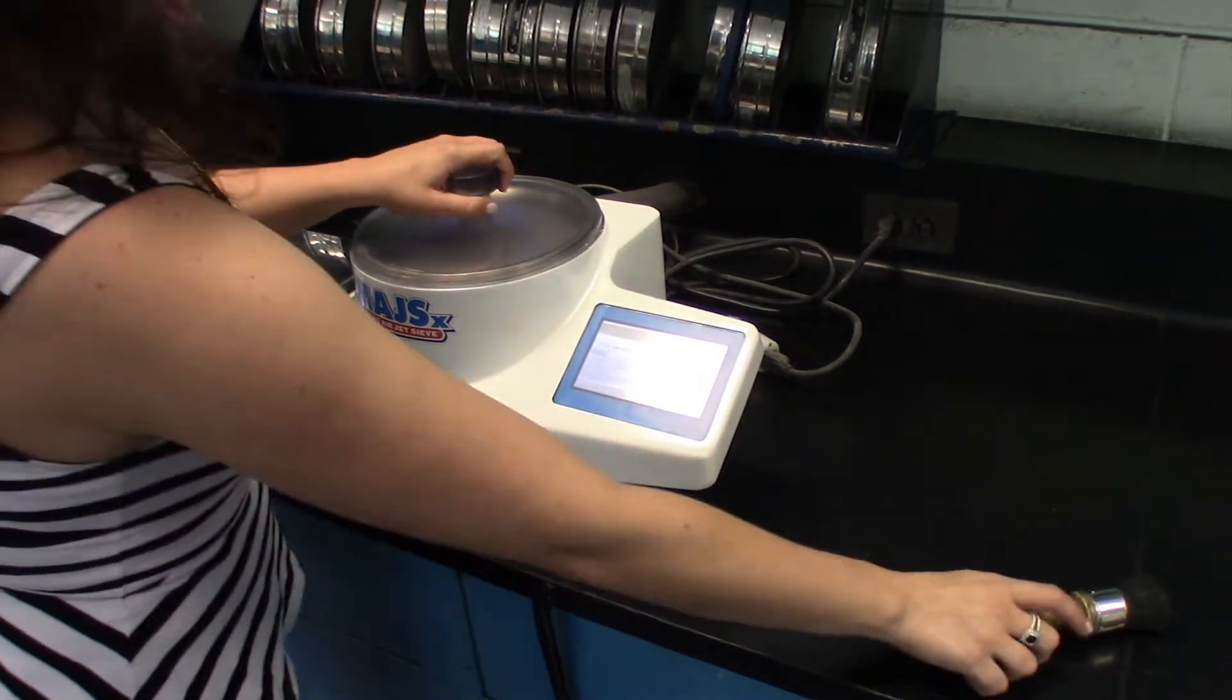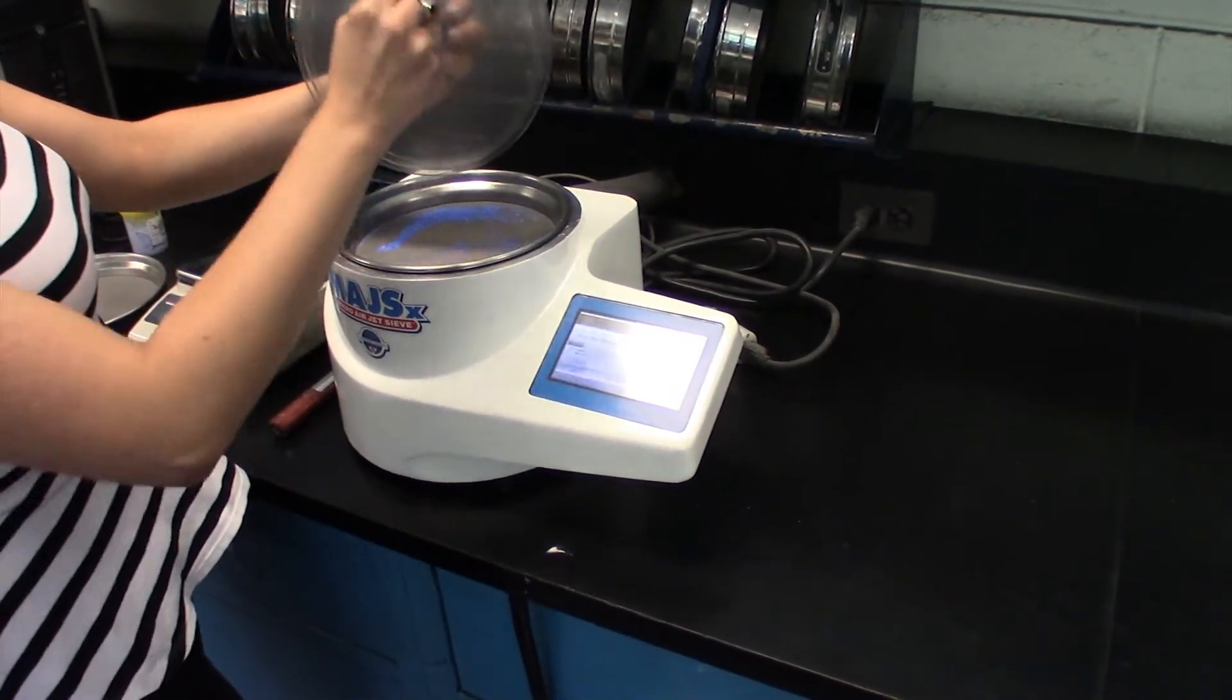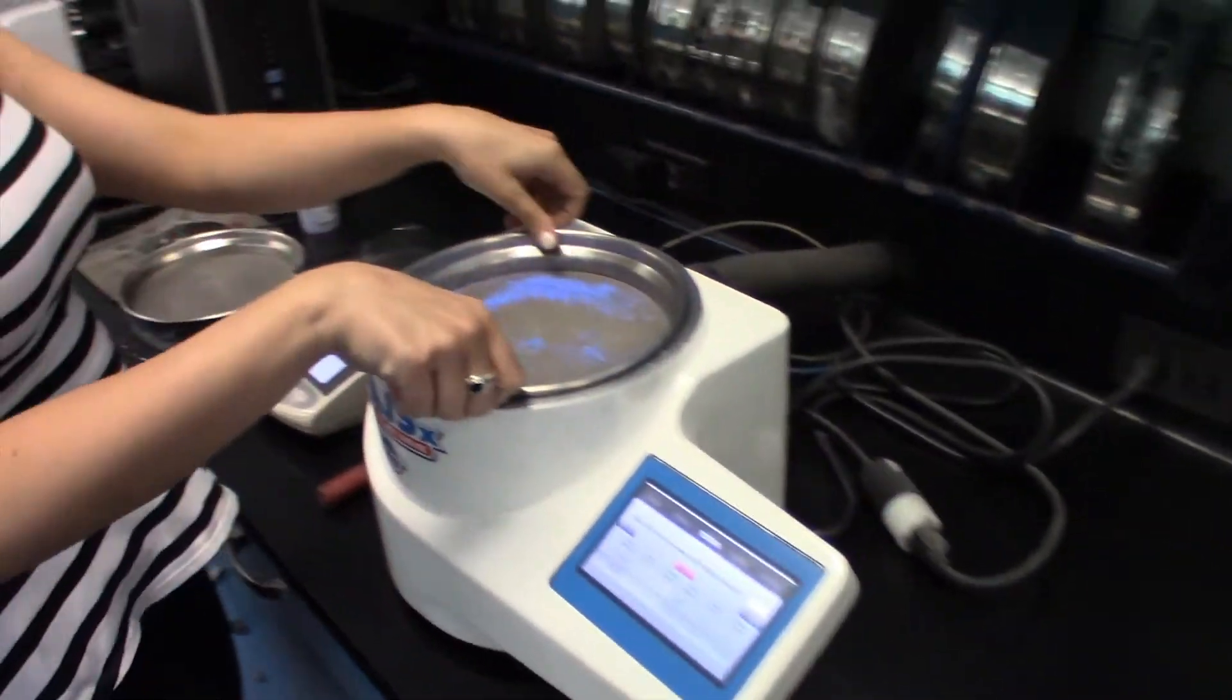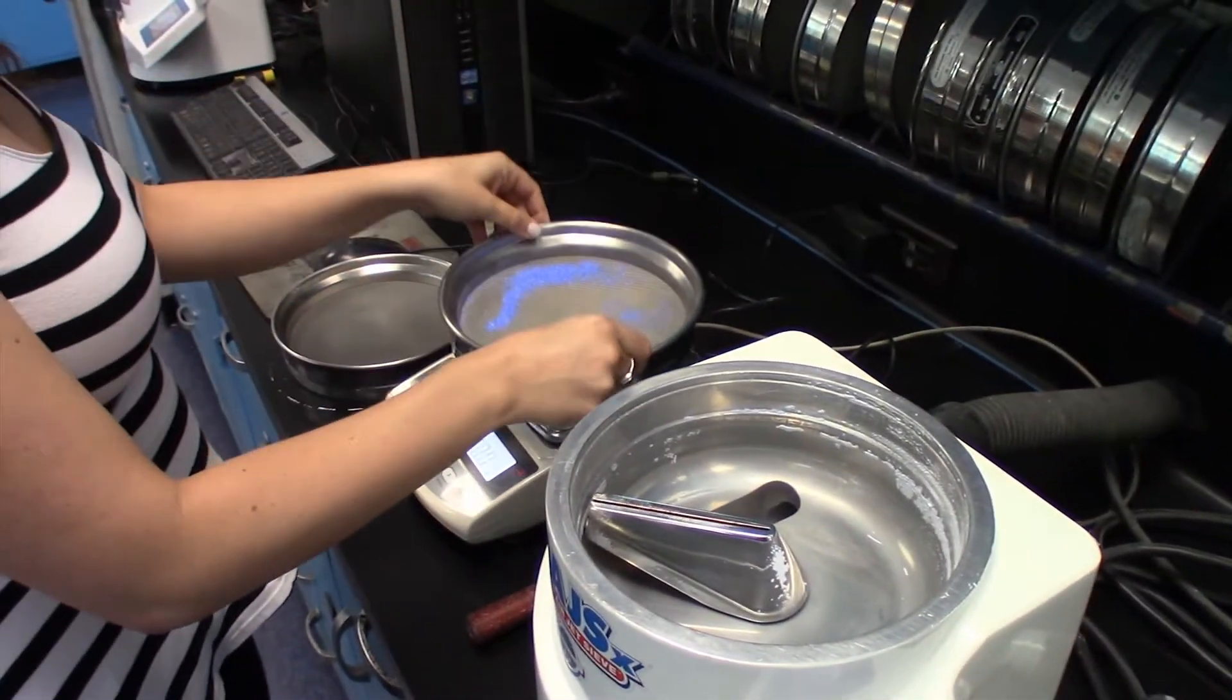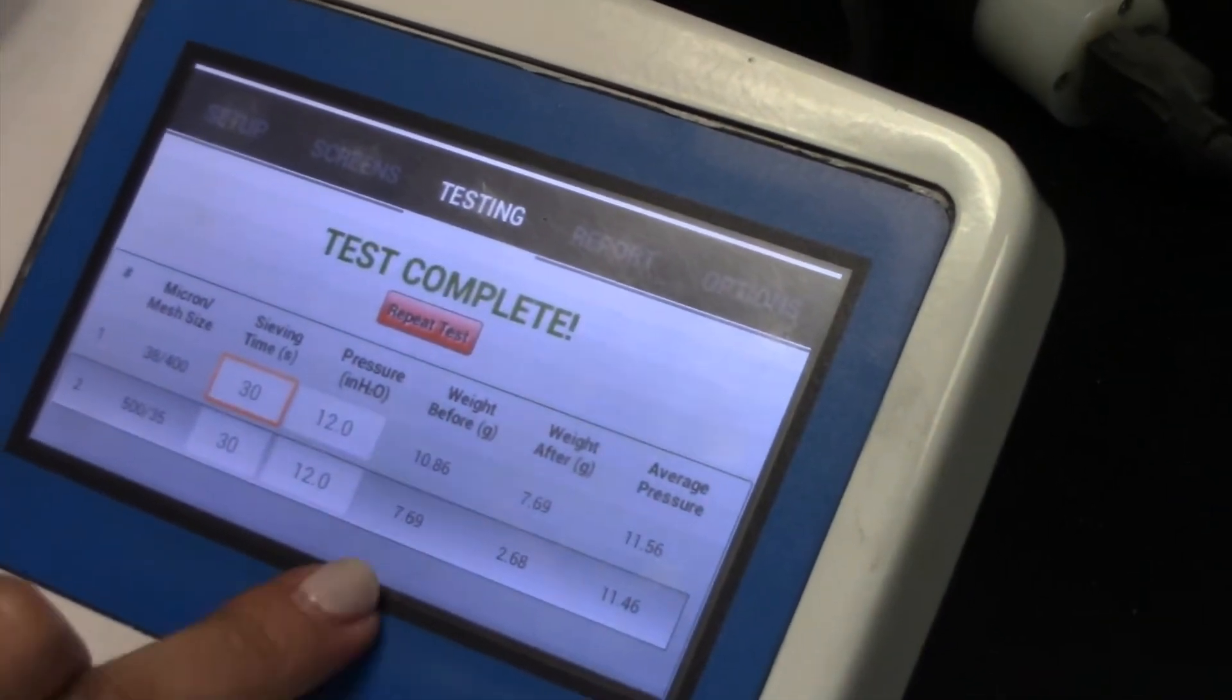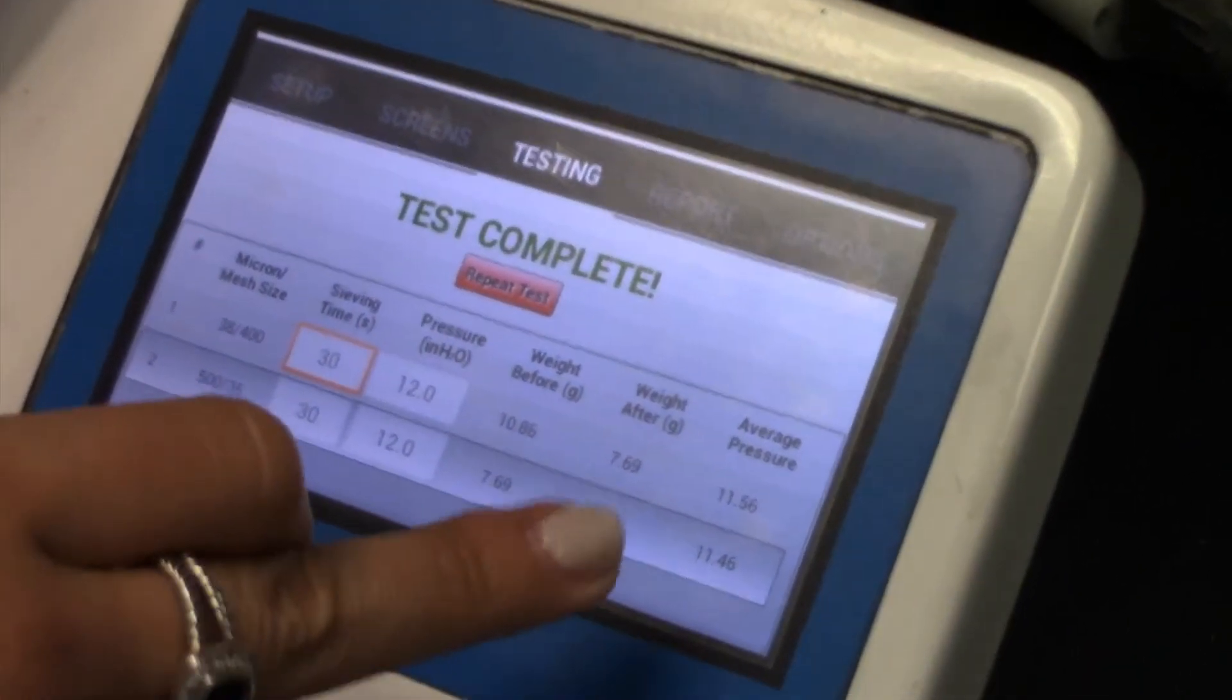We will press next, remove any material that got stuck to the lid, and we'll weigh the sieve screen with the retained sample. Next. So now our test is complete. You can see here the weight before and the weight after.